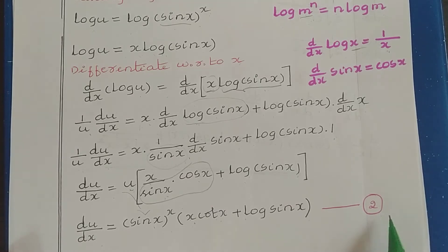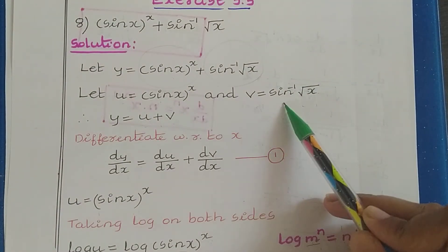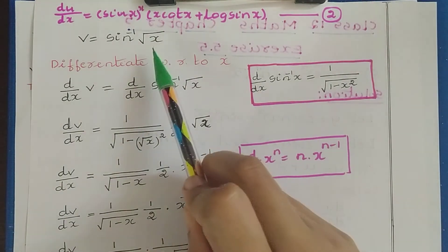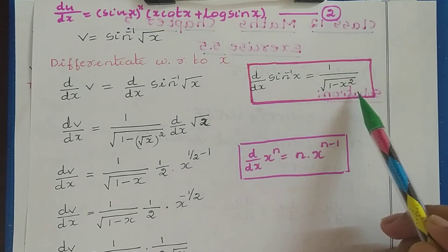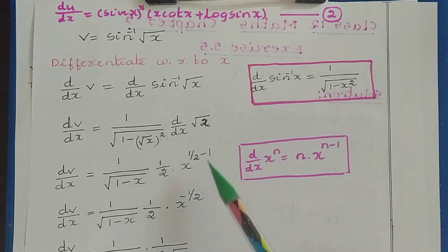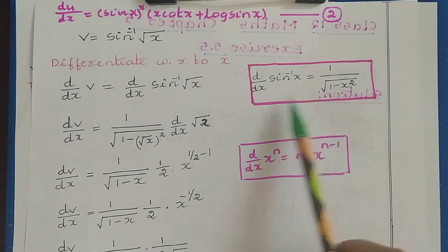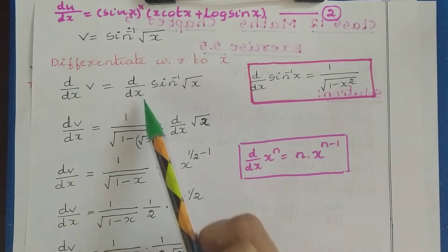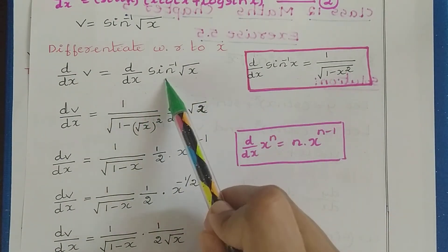Next we find the derivative of v = sin⁻¹(√x). We know the derivative of sin⁻¹(x) is 1/√(1 − x²), so we apply this formula here. Differentiating with respect to x: dv/dx = d/dx of sin⁻¹(√x). We apply the formula, replacing x with √x.